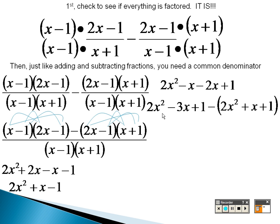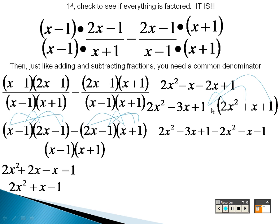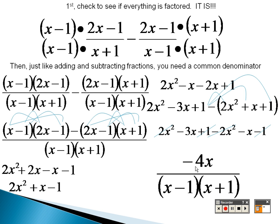But I need to subtract all of that that I FOILed. After I distribute that negative through to everything, I end up with 2x squared minus 3x plus 1, and then this negative becomes negative 2x squared, negative x, and negative 1. Now you've got to figure out what crosses out: 2x squared and negative 2x squared are gone, 1 and negative 1 are gone. I have negative 3x and negative x, so all I have left on top is negative 4x, and on the bottom I still have x minus 1 and x plus 1.